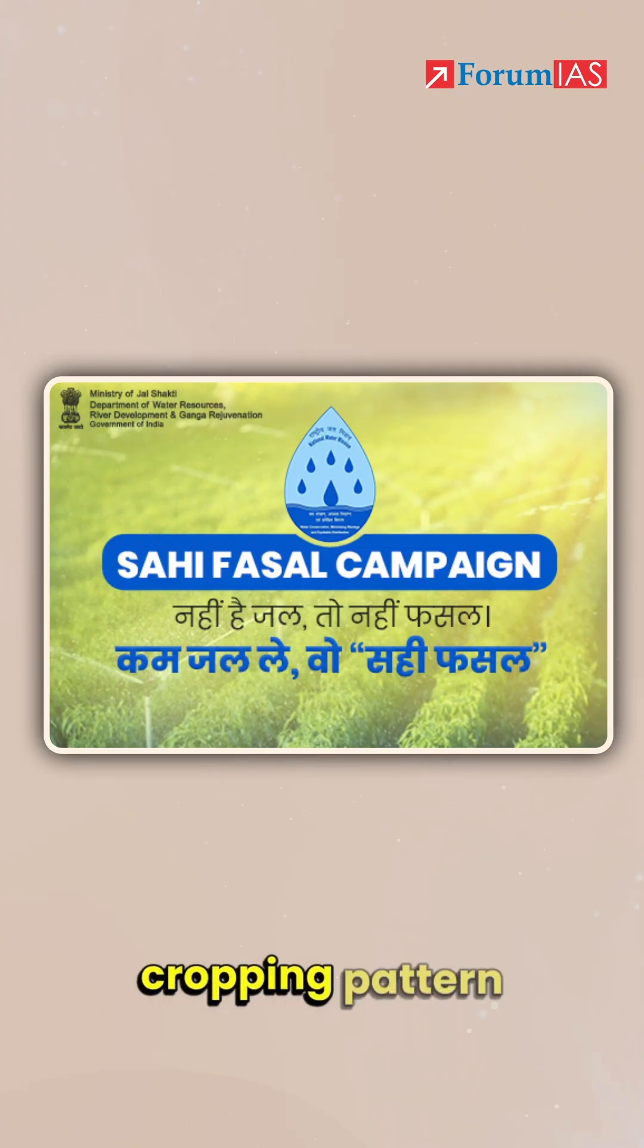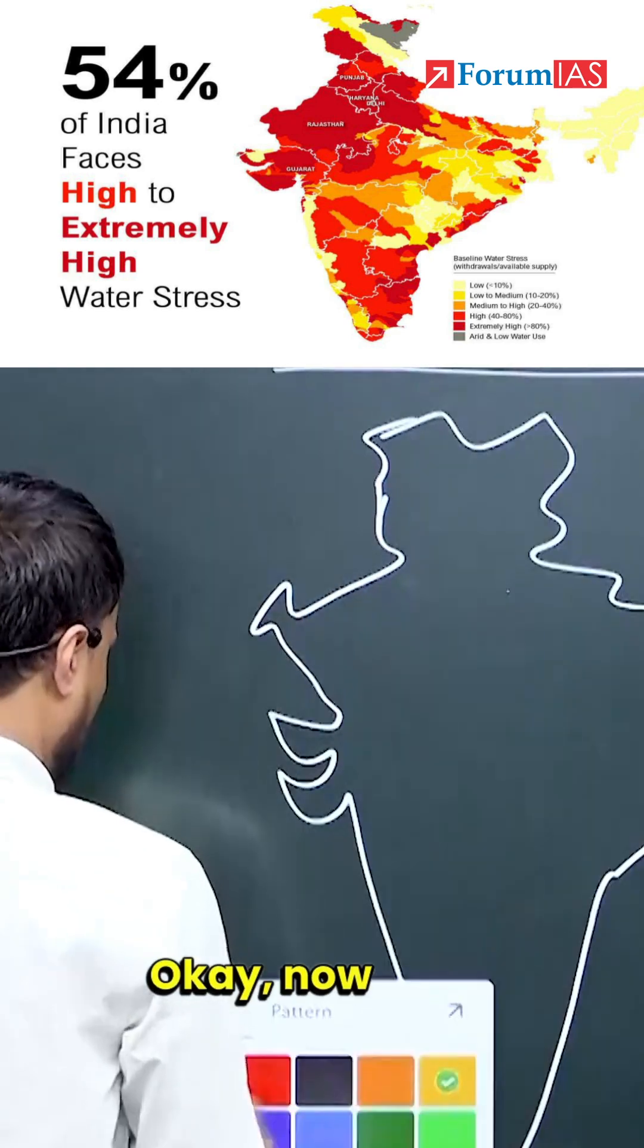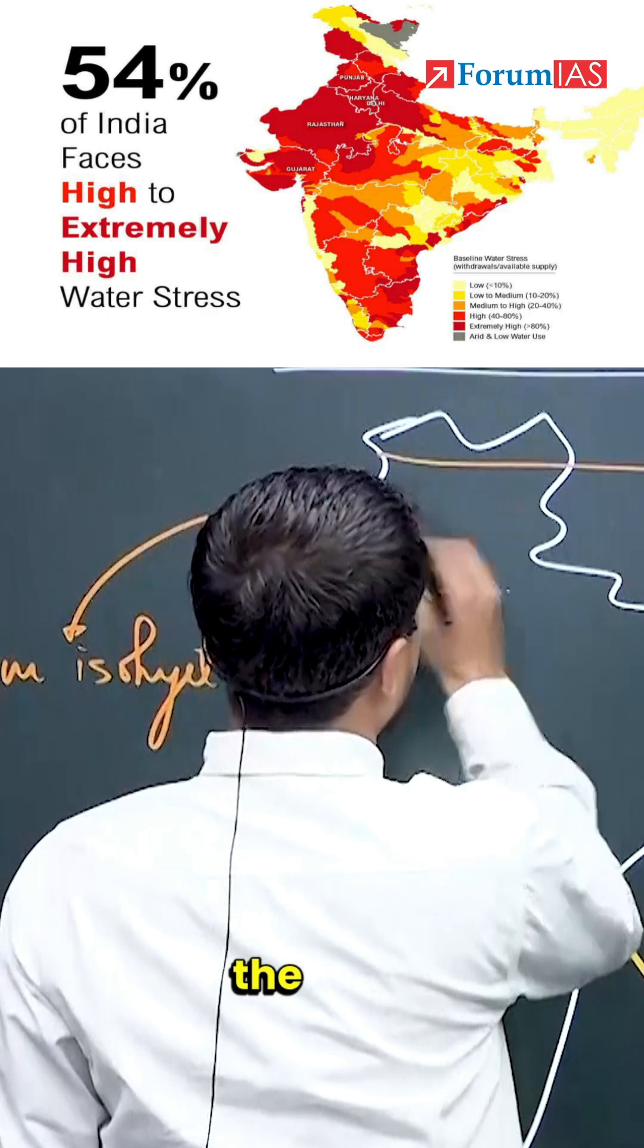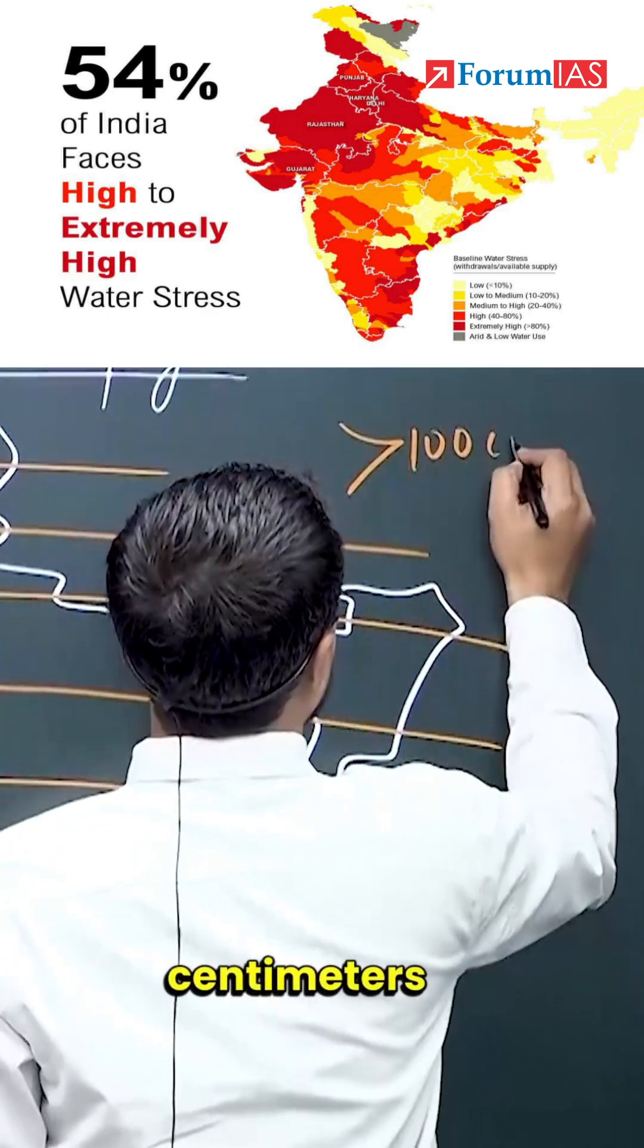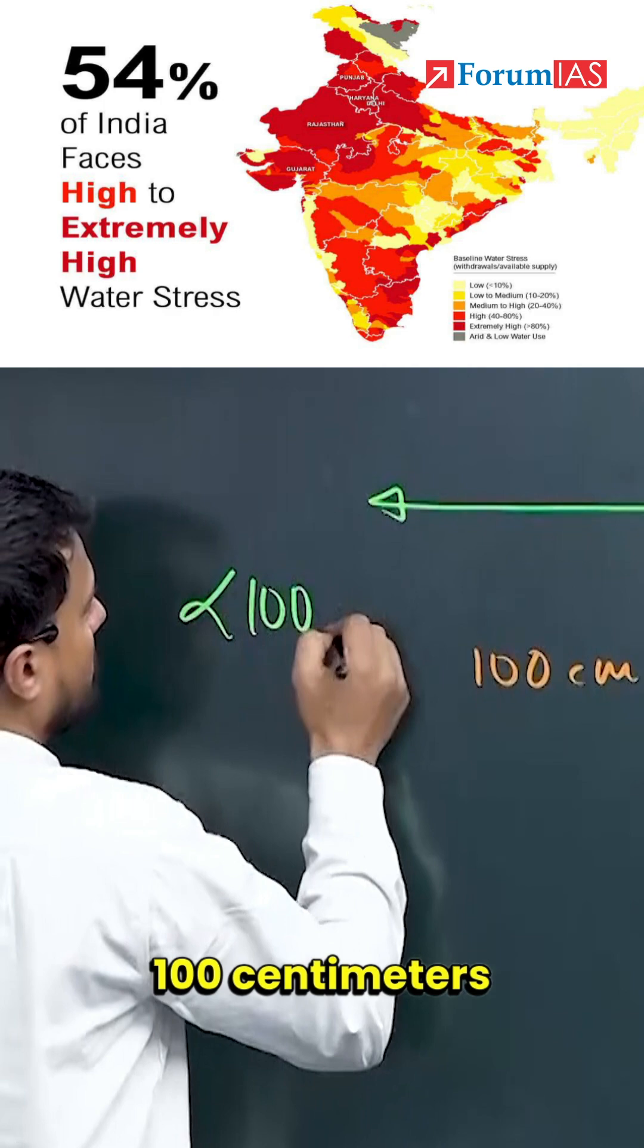Sahih Fasal campaign involves cropping patterns as per agro-climatic conditions. There exists a line known as the 100 centimeter isohyet. This side of the zone receives more than 100 centimeters of rainfall, while this side receives less than 100 centimeters of rainfall.